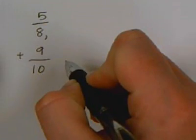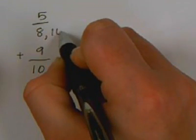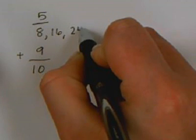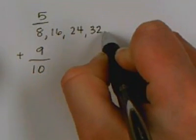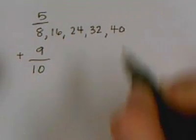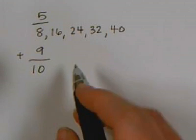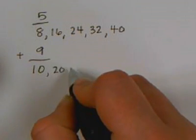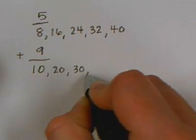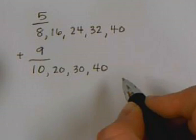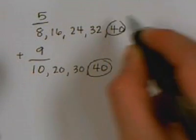First thing that you do is list the multiples. So 8, 16, 24, 32, and 40. Then on the bottom: 10, 20, 30, and 40. They've gotten to one that's the same, and that's 40.